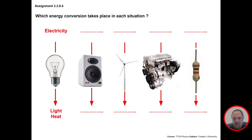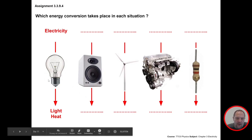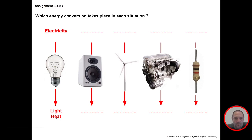Here's a question: five different items are shown. Which energy conversion takes place in each situation? For example, electricity goes into a light bulb and you get light — plus heat as a waste product. Please stop the movie for a minute and fill this in.